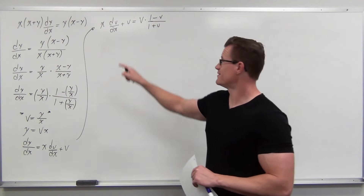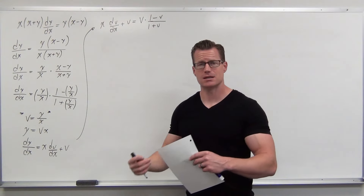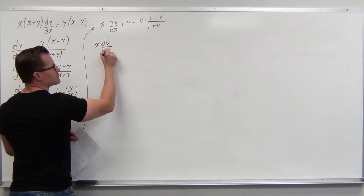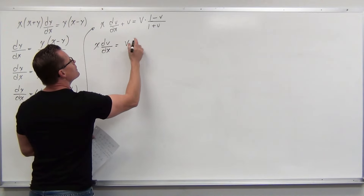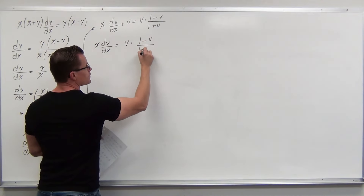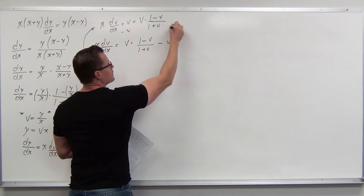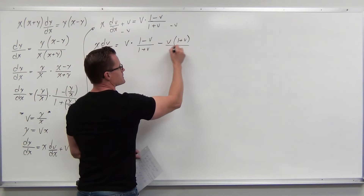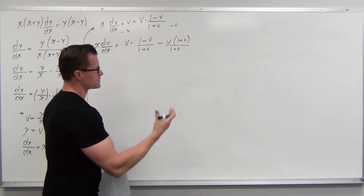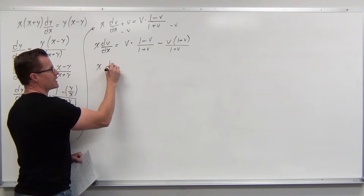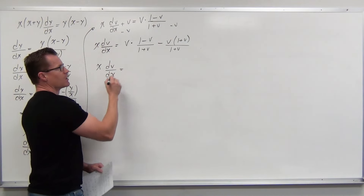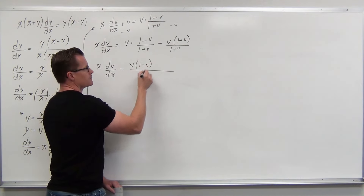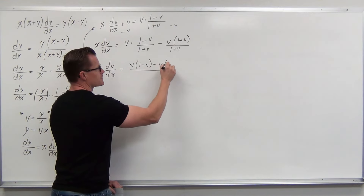In homogeneous equations, dy/dx always becomes x(dv/dx) + v because you always use the same substitution v = y/x. On the right-hand side we have a lot of v's. After substituting, we subtract v from both sides to group our v terms, and we're going to need a common denominator to form one fraction — just like last time.